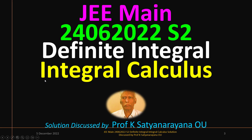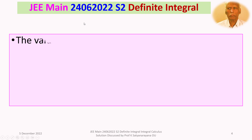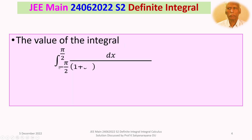We now discuss the solution of a problem from the section Integral Calculus. This problem is on the evaluation of a definite integral. This question appeared in the Joint Entrance Examination Main held on 24th June 2022, second shift. The given problem is the value of the integral from minus π/2 to plus π/2 of dx divided by (1 + eˣ)(sin⁶x + cos⁶x).